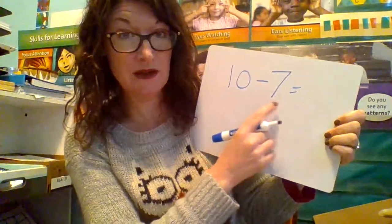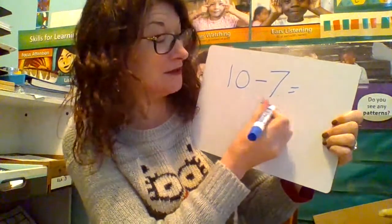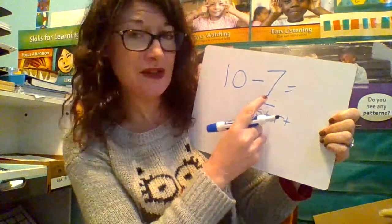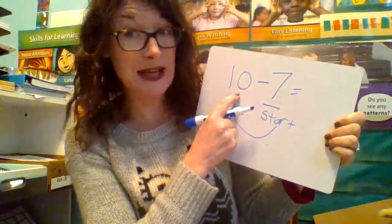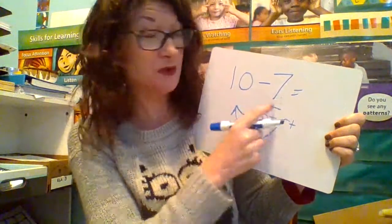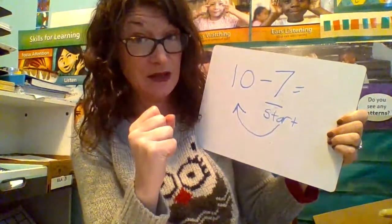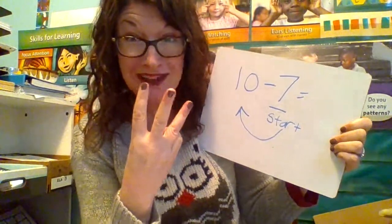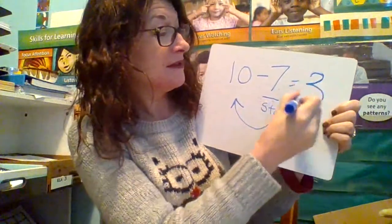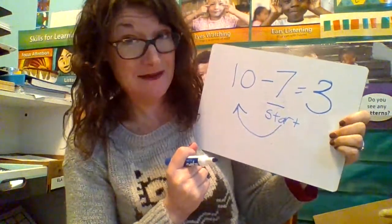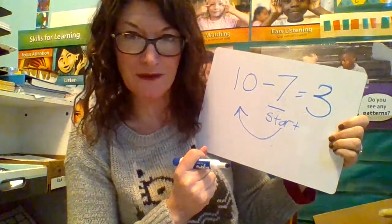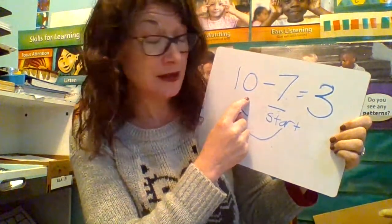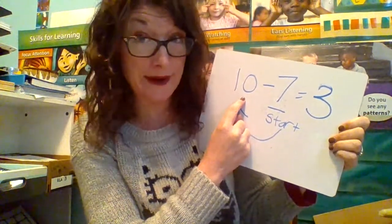I'm grabbing number 7, and I'm going to count on until I get to 10. 7, 8, 9, 10 — it's 3! There's only 3 counts from 7 to get to 10. That was quick — we solved that really quickly. If we went backwards and took 7 away from 10, it might take a little bit longer. So the counting on strategy can sometimes be really quick and efficient.